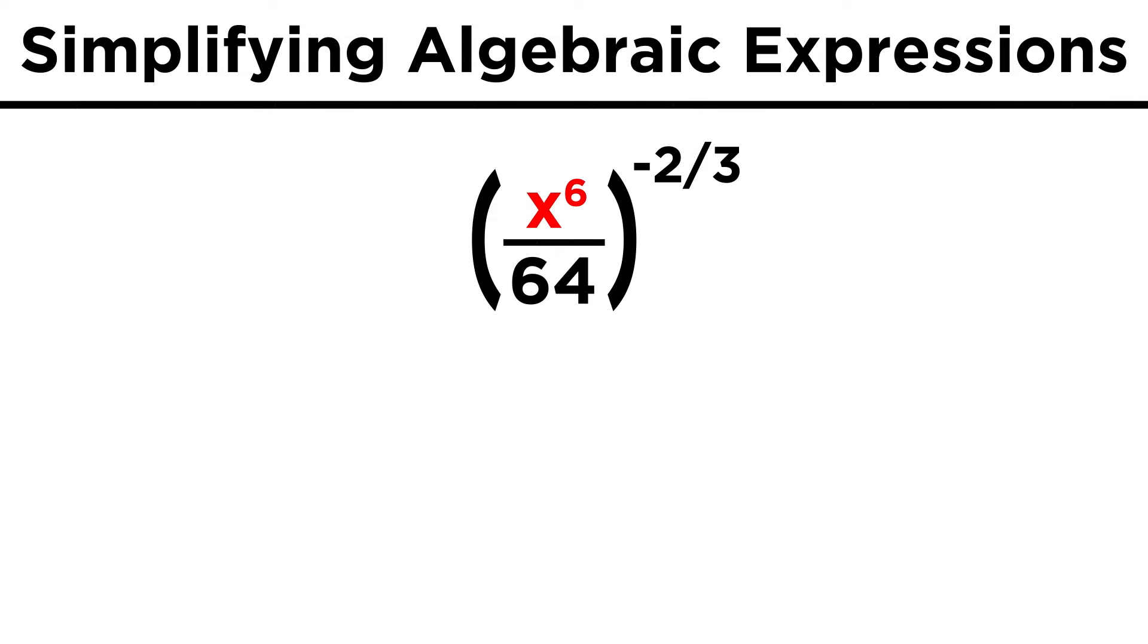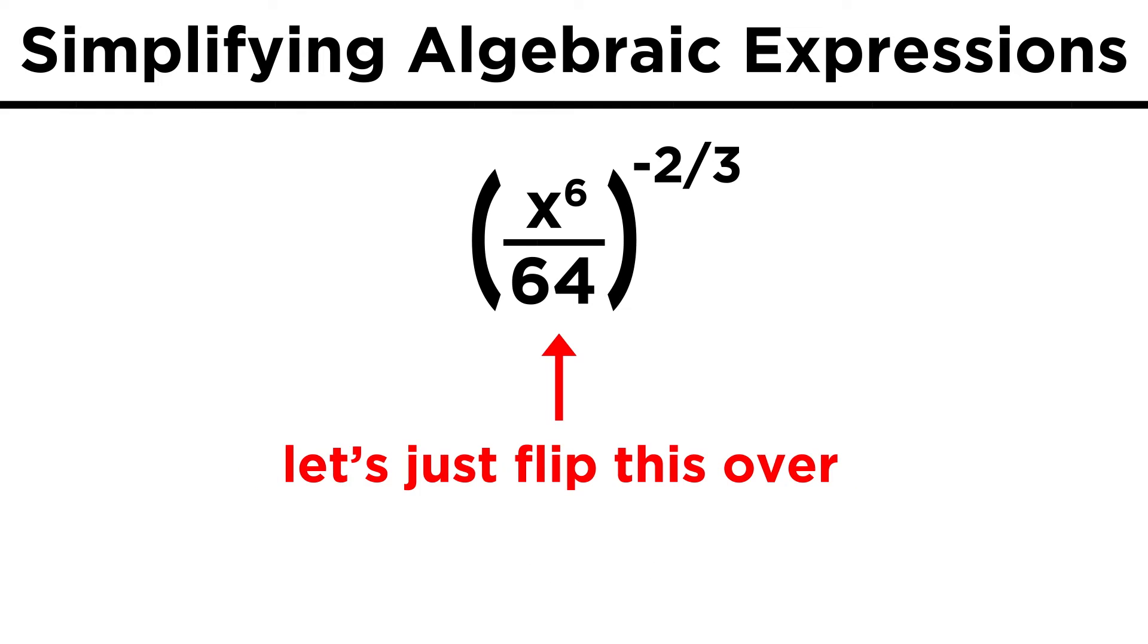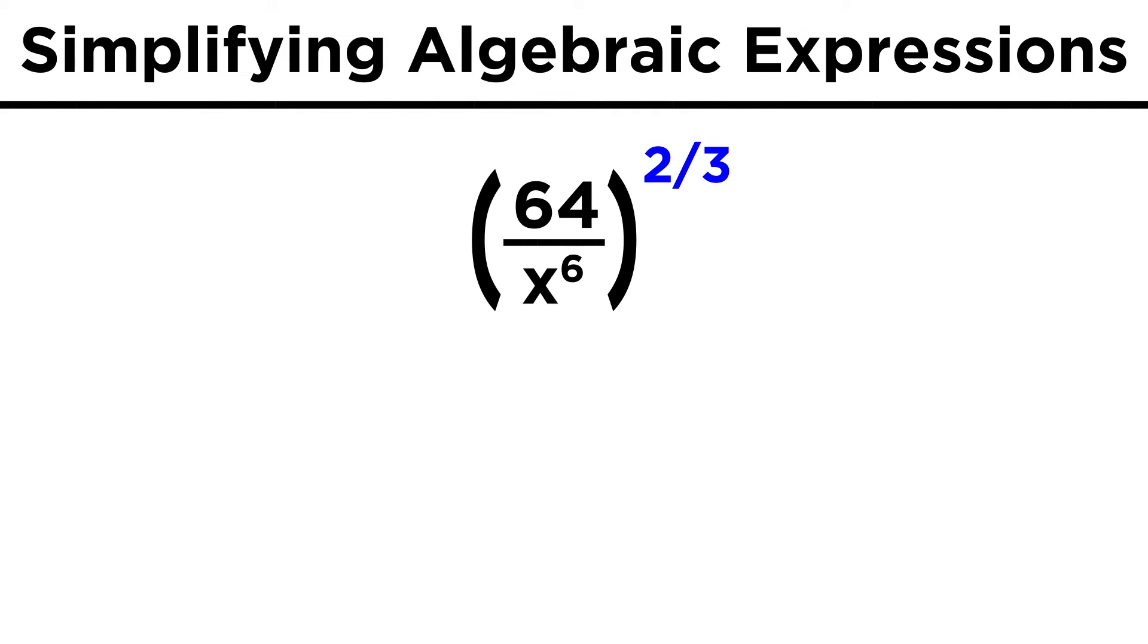How about this one, x to the sixth over sixty-four, all raised to the negative two-thirds power. There are a few ways to approach this, but let's first address the fact that the exponent is negative. If this were a single term, we could put one over the term and then make the exponent positive, the way we said that x to the negative one is one over x. But since we already have a fraction, let's just flip it over. If we turn this upside down, we can change the exponent to positive two-thirds.